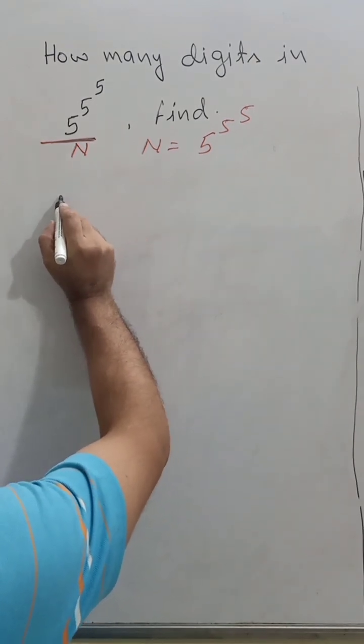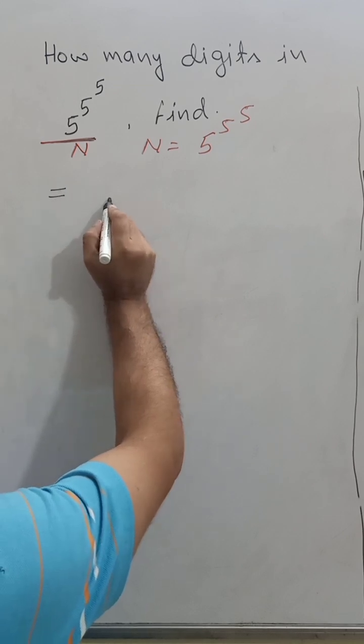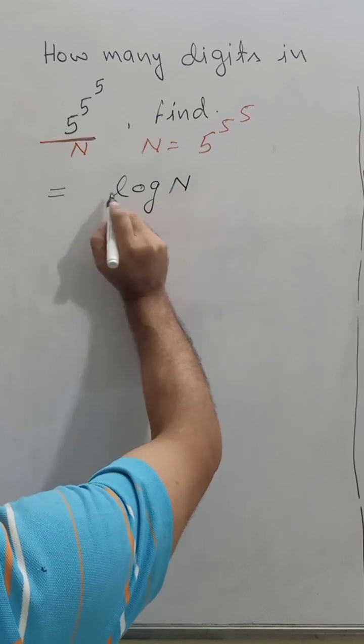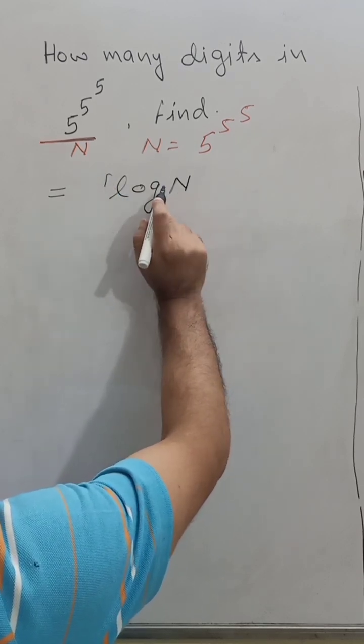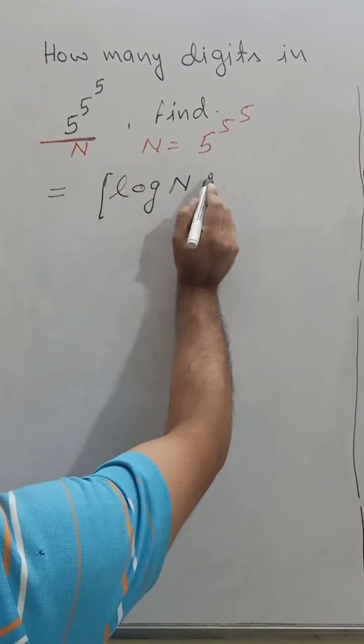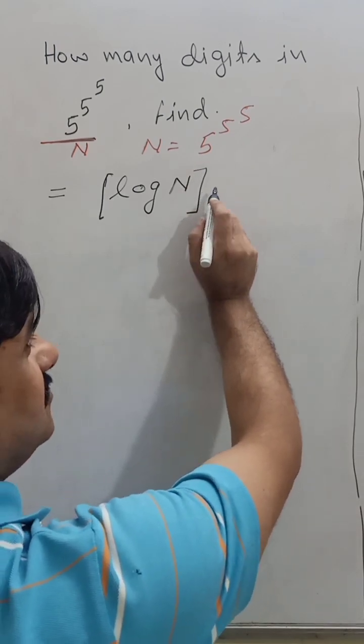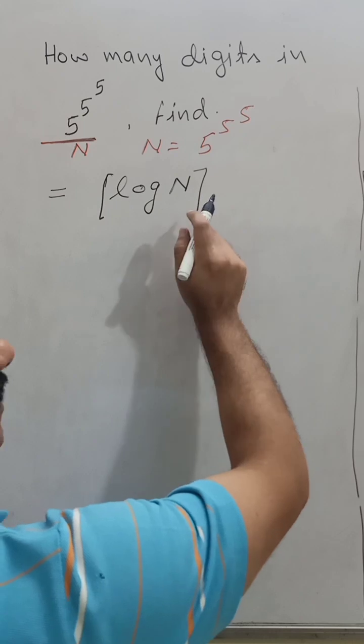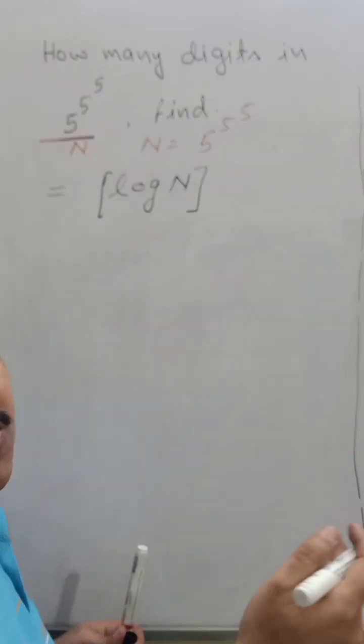Number of digits is equal to the log of capital N, log to the base 10, and its GIF. GIF means greatest integer function - this bracket represents GIF.